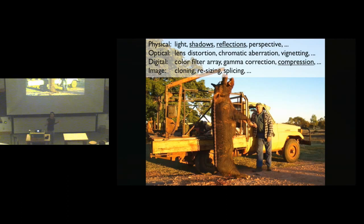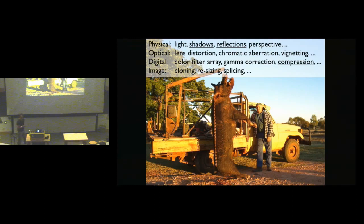During Q&A, an audience member asks about a photo of a large hog. The speaker explains: it's actually a real photo, but a perspective trick is being played. Notice how far back the hunter is standing from the hog — perspective distortion makes the animal look even bigger. If you think he's standing right next to it, you misjudge the scale. He stepped a few steps back, and suddenly your depth judgment is off. The hog was still reportedly around 800 pounds.